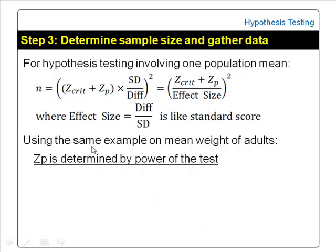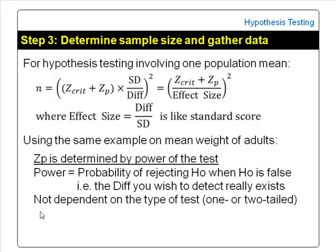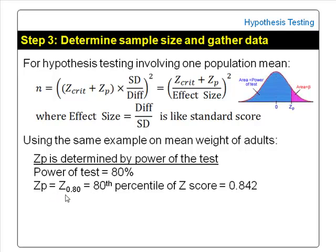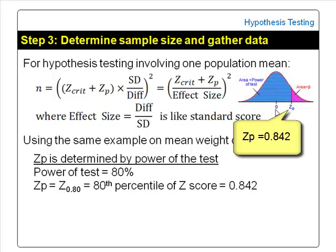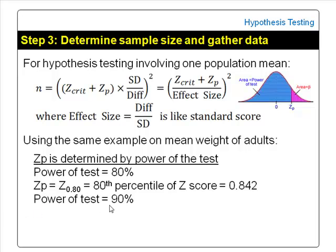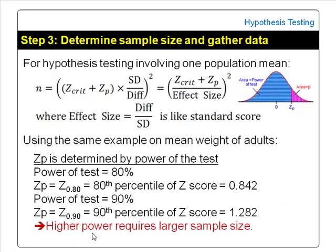Z-P is determined by the power of the test. Power of the test is the probability that the null hypothesis will be rejected when the null hypothesis is false — that is, if the difference you wish to detect really exists. Z-P is not dependent on the type of test, whether it is one-tailed or two-tailed. For a test with power of 80%, Z-P is the 80th percentile of the standard score, Z0.80, and is 0.842. For a test with power of 90%, Z-P is the 90th percentile, Z0.90, and is 1.282. From the formula, we can see that a test with higher power requires a larger sample size.